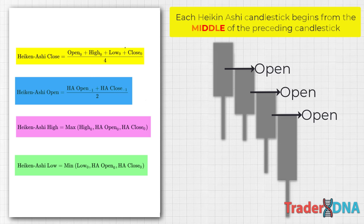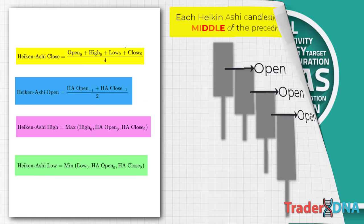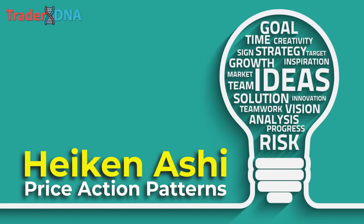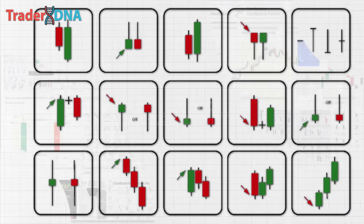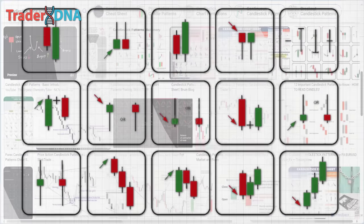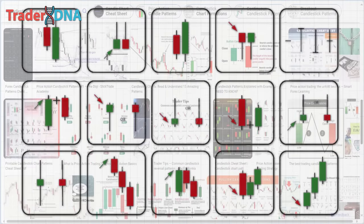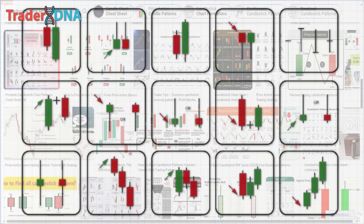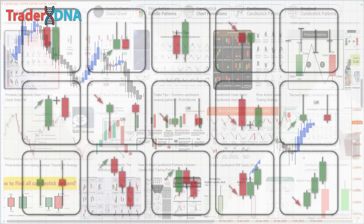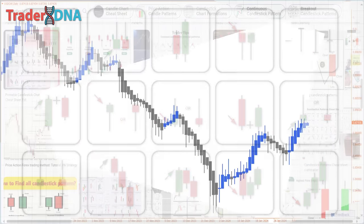It's crucial to note that Heikin Ashi bars should not be mistaken for a trading system. Simply going long on bullish bars or short on bearish bars without a comprehensive trading strategy can lead to significant losses. Similar to candlestick bars, Heikin Ashi bars provide valuable information about the market. When using candlestick bars, traders encounter numerous types of price action patterns such as Doji, Gravestone Doji, Dragonfly Doji, Pin Bars, Engulfing Candlesticks, and many more. However, when utilizing Heikin Ashi bars, these patterns are condensed into three main types of price action patterns.